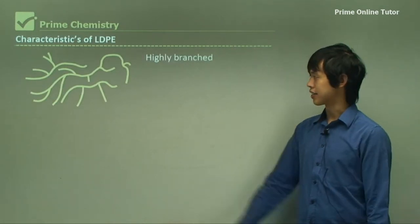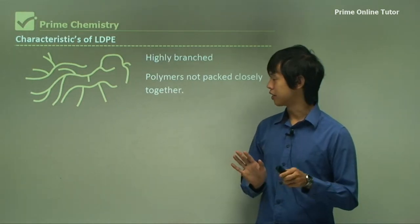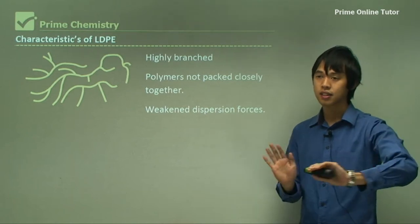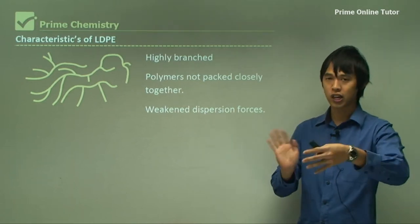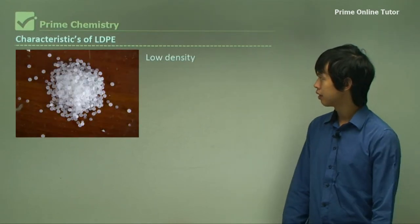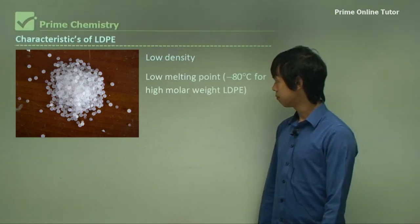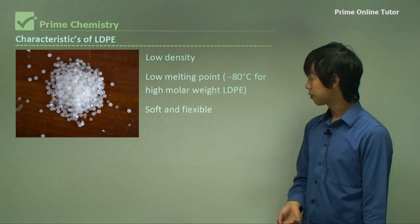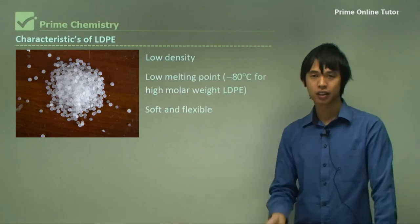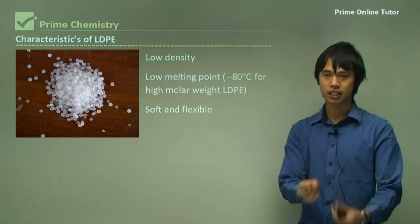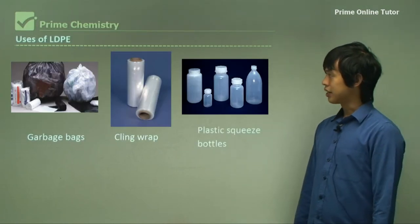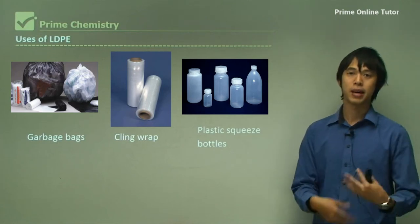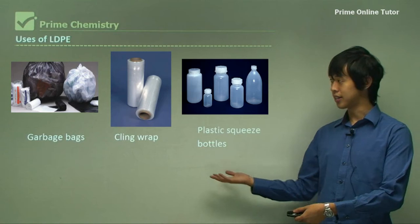The characteristics of LDPE are that it's highly branched. Because of these branches, the polymer molecules are kept at a distance from each other, so the dispersion forces are quite weak and the force of attraction between molecules is low. This gives it low density — hence the name — and a low boiling point of about 80°C. It's very flexible and soft, just like plastic bags, which you can easily manipulate. That's why its properties inform its uses: garbage bags, cling wrap, plastic squeeze bottles.